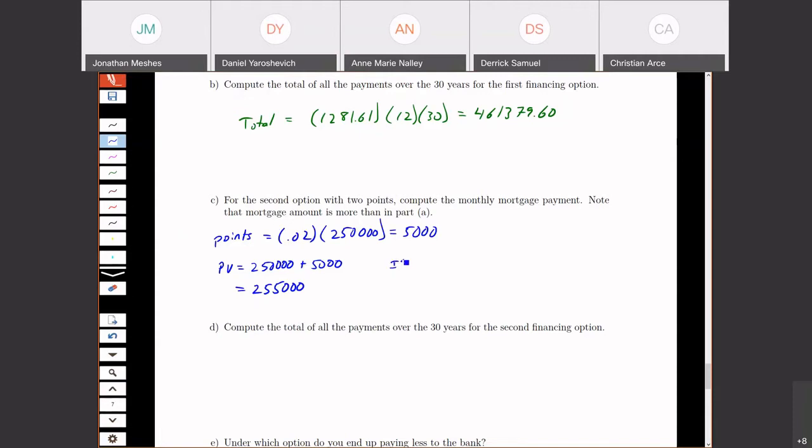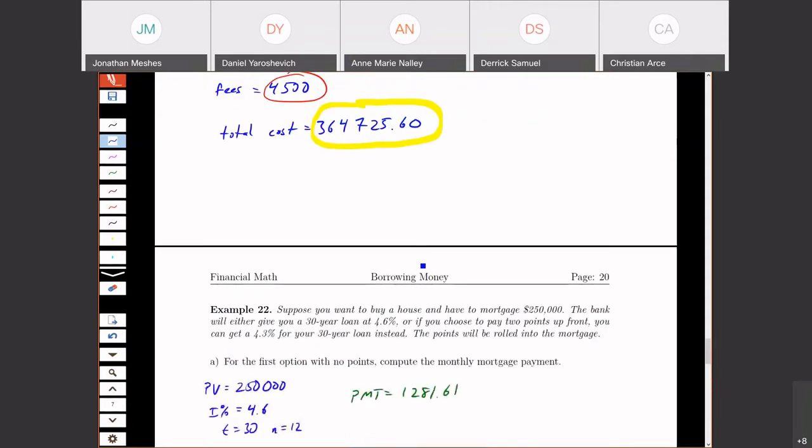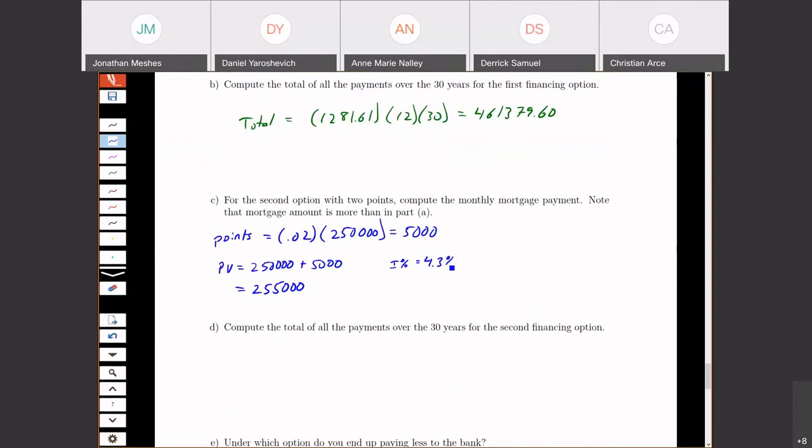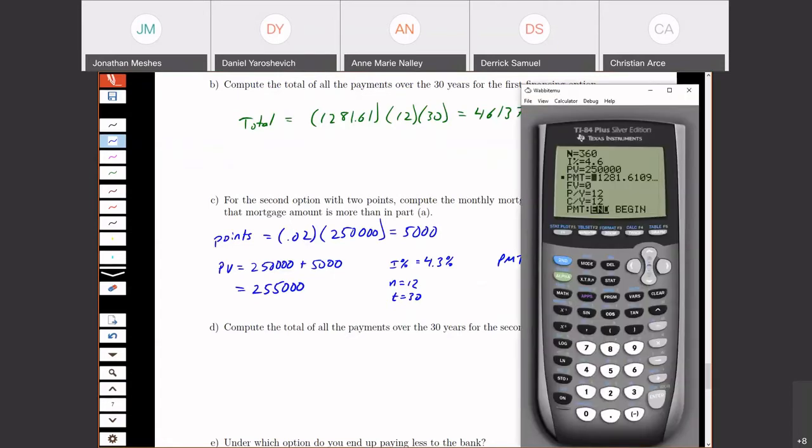Our interest rate, they gave us a better rate. They said this is going to be 4.3% instead. The end is the same because it's still 12 times 30. Change this to 4.3% and we change this to 255,000. Now my payments are $1,261.92.